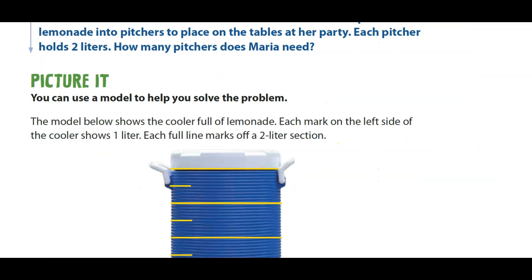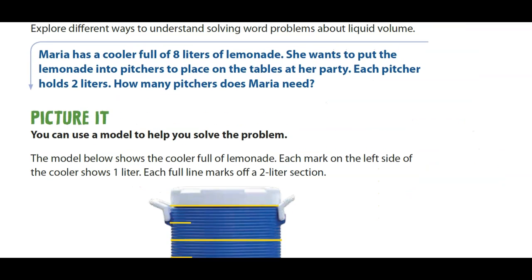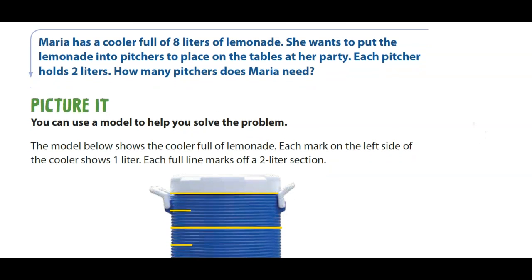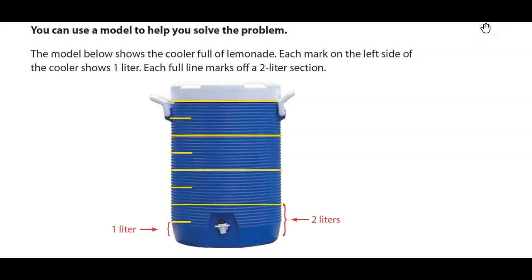It says you can use the model to help you solve the problem. So again, she needs to put 8 liters into each pitcher that holds only 2 liters. The model below shows the cooler is full of lemonade. Each mark on the left of the cooler is 1 liter. So this is 1 liter right here.